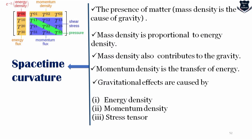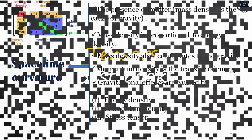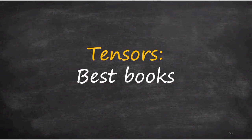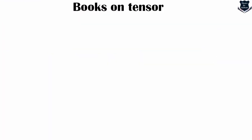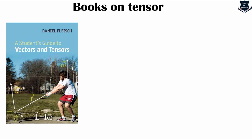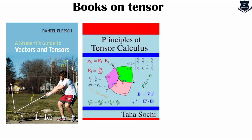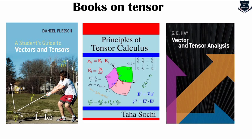Now we come to the most important part: the best books on tensors. The first book — which I've also mentioned in earlier videos — is Daniel Fleisch's A Student's Guide to Vectors and Tensors. This will be your Bible. The next is Taha Sochi's Principles of Tensor Calculus, a wonderful book. The third is G.E.A. Hay's Vector and Tensor Analysis. The fourth is A.I. Borisenko and Tarapov's Vector and Tensor Analysis with Applications — a very good book. The fifth is Louis Brand's Vector and Tensor Analysis, a bit more advanced.